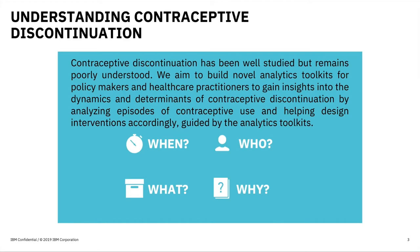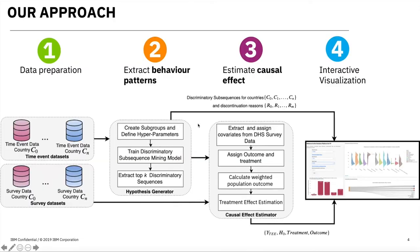Specifically, we explore three questions. What do women transition to when they discontinue or switch between contraceptive methods? Are there any recurrent sequences of contraceptive use and discontinuation across countries? Can we go beyond covariate analysis to establish a causal effect of a particular contraceptive for a specific discontinuation reason? This platform was designed to explore contraceptive use in countries with available DHS survey and calendar data information.